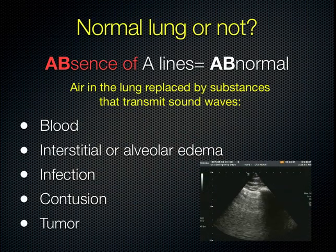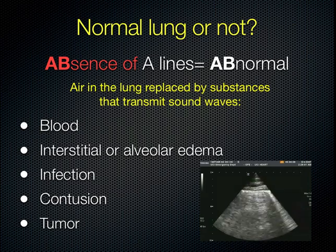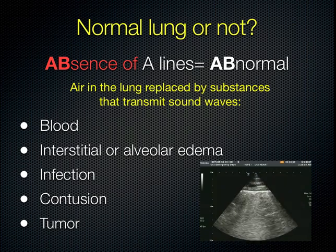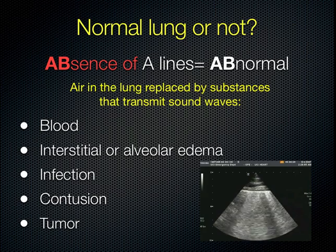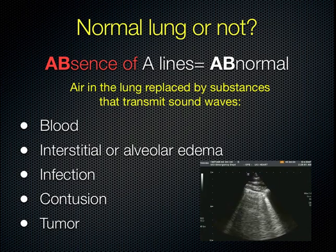Once you've noted whether there are A lines, we move on to B lines. If you have absence of A lines, we think about something being abnormal — A lines should be present in normally aerated lung. If they are not there, something in the lung has replaced the air. That something can be anything from blood to alveolar edema, infection, contusion, tumor, and so forth. These substances will transmit waves unlike air.